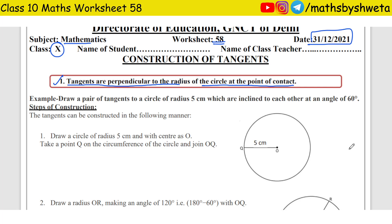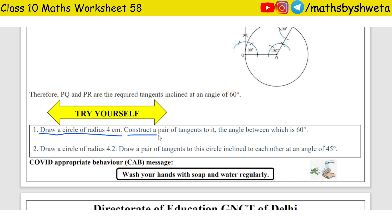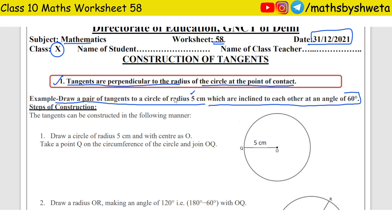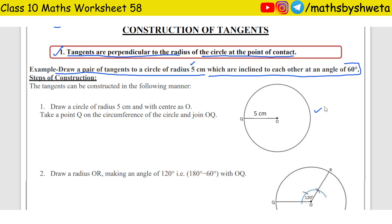Let's start with the worksheet. In the first example: draw a pair of tangents to a circle of radius 5 cm which are inclined to each other at an angle of 60 degrees. The first question is the same but with a circle of radius 4 cm and the angle between the tangents is 60 degrees. Here I am doing 5 cm and you are going to do 4 cm yourself, step by step.